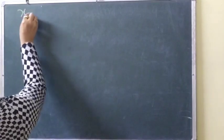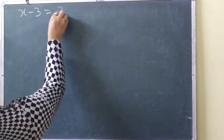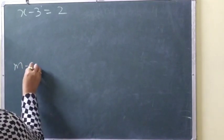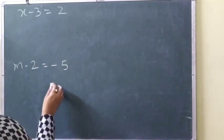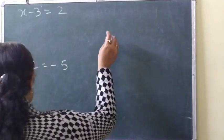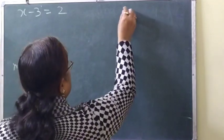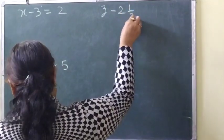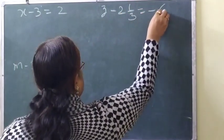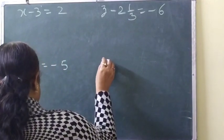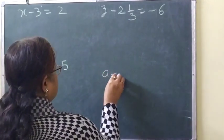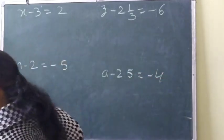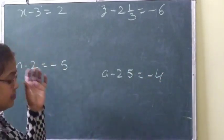Now let's do the next set of questions. Question: x minus 3 is equal to 2. Next: m minus 2 is equal to minus 5. Next: z minus 2 and 1 by 3 is equal to minus 6. And: a minus 2.5 is equal to minus 4. These are the questions we have to solve.